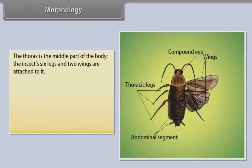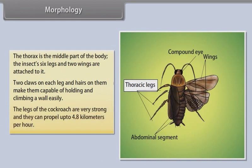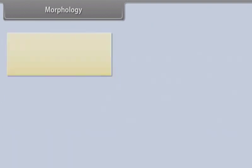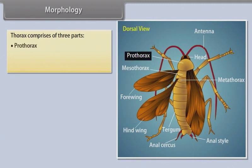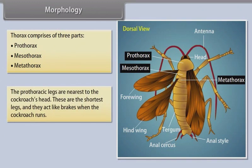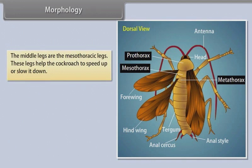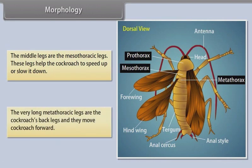The thorax is the middle part of the body. The insect's six legs and two wings are attached to it. Two claws on each leg and hairs on them make them capable of holding and climbing a wall easily. The legs of the cockroach are very strong and they can propel up to 4.8 kilometers per hour. The thorax comprises three parts: prothorax, mesothorax and metathorax. The prothorax legs are nearest to the cockroach's head and are the shortest; they act like brakes when the cockroach runs. A portion of the prothorax also covers the cockroach's head. The mesothorax legs help the cockroach to speed up or slow down. The very long metathorax legs are the cockroach's back legs and they move the cockroach forward.